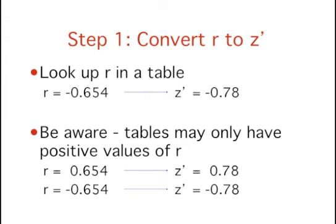Remember our three steps? First, we have to convert our R value to Z'. If you look up our R value in a transformation table or calculator, you'll find that the value of Z' associated with an R of negative 0.654 is negative 0.78.